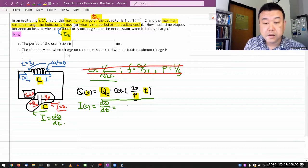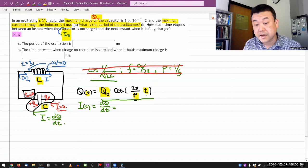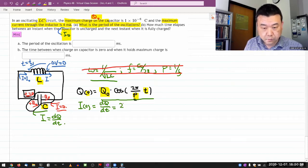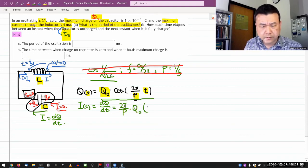which I can write down based on this. So it should be derivative of the outside. So cosine becomes minus sine times the derivative of the inside. So I have the one factor that comes up, two pi over p times q naught, and the derivative of outside is minus sine of two pi over p t.